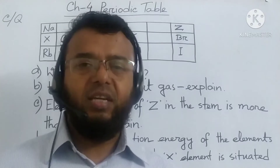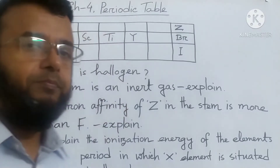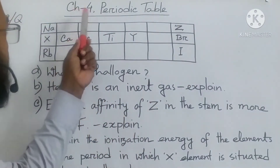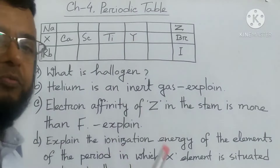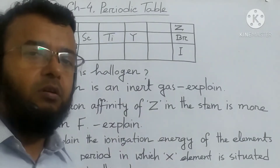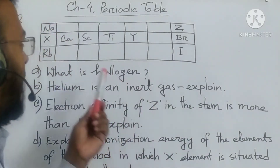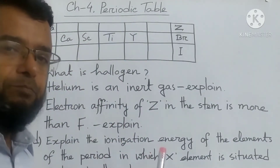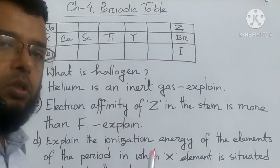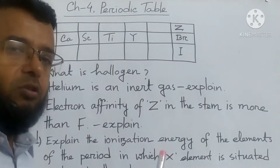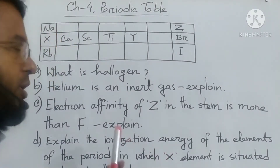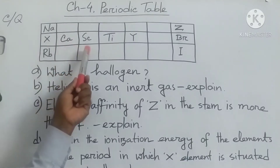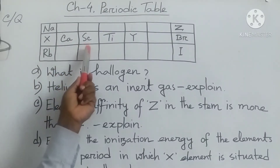Today I will discuss Chemistry Chapter 4, Periodic Table. From this chapter, I have written a creative question. All of you see that. You must write the question in your copy. I have drawn a table. It is a part of the periodic table.